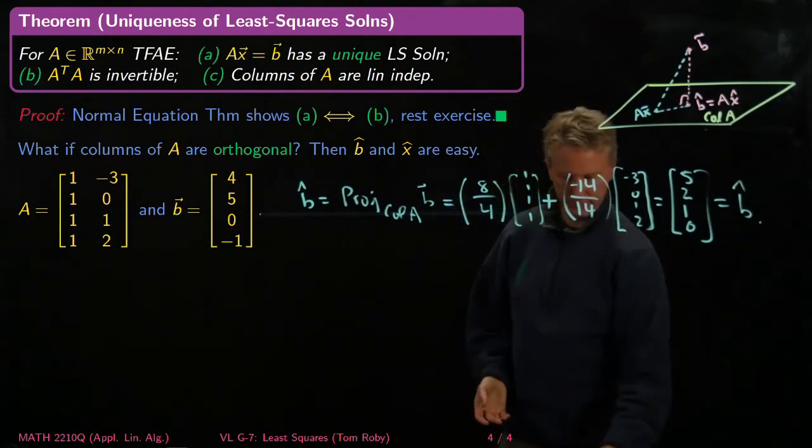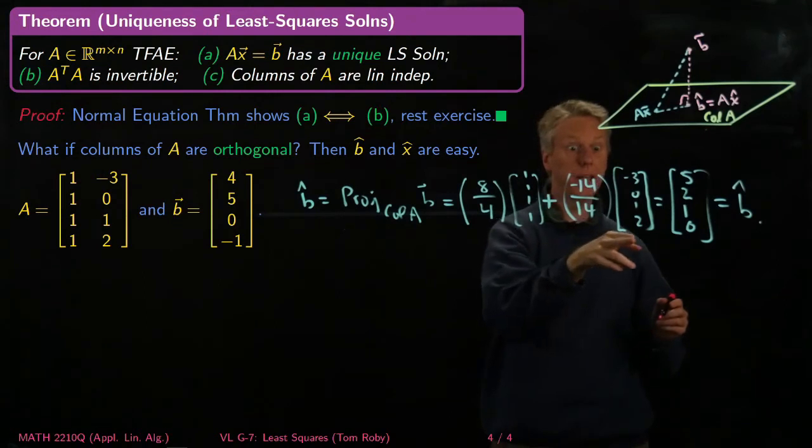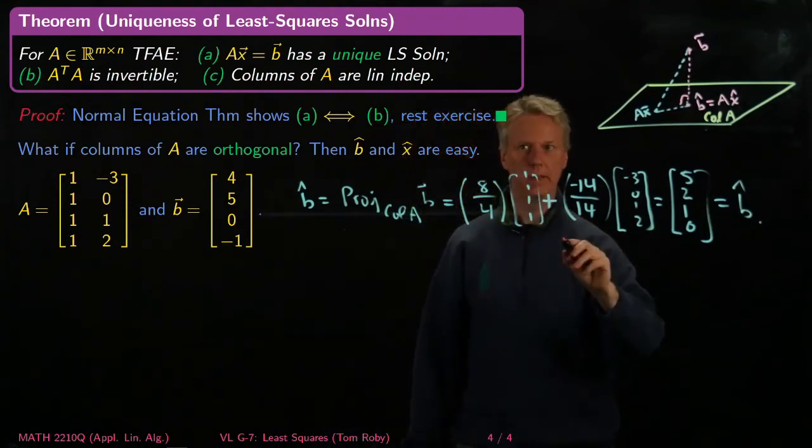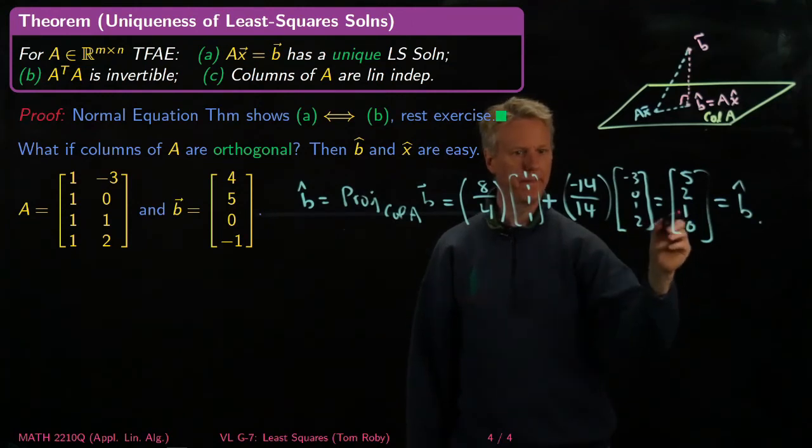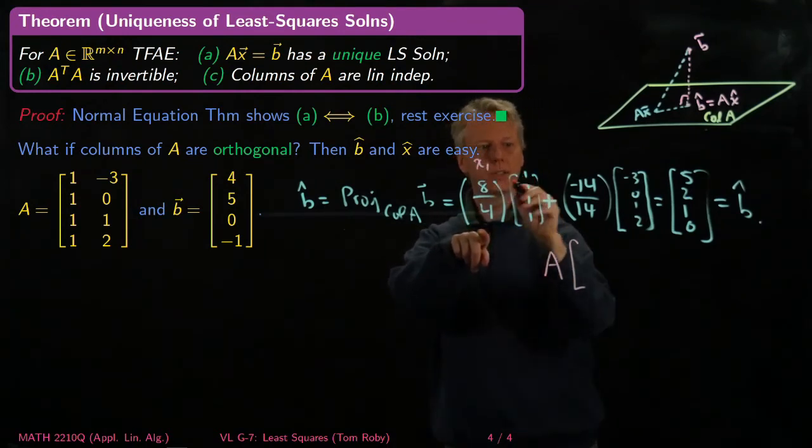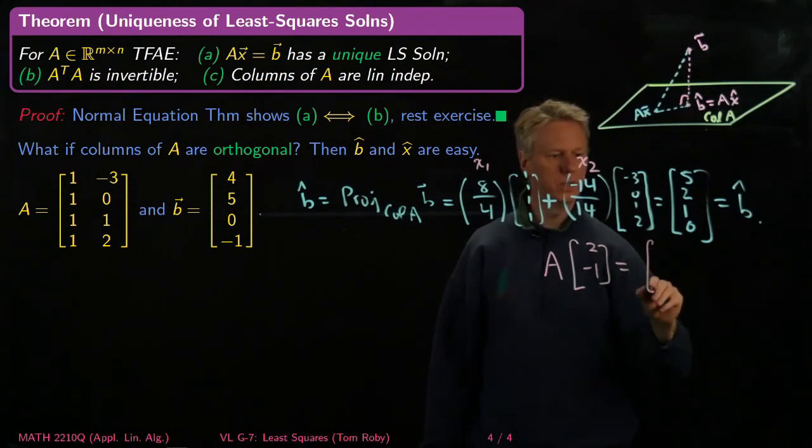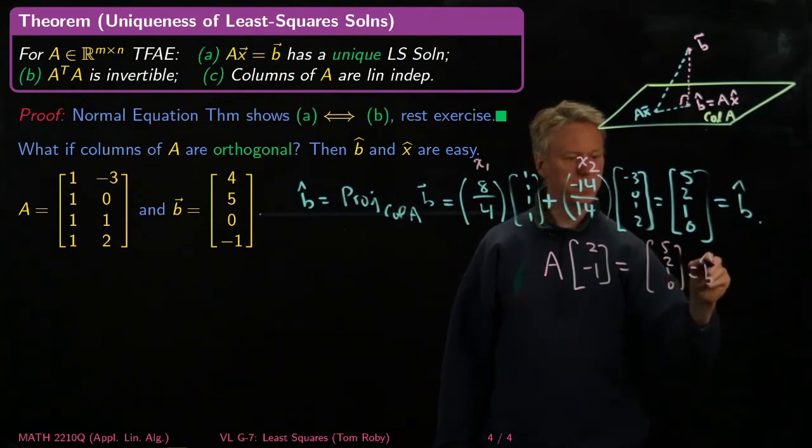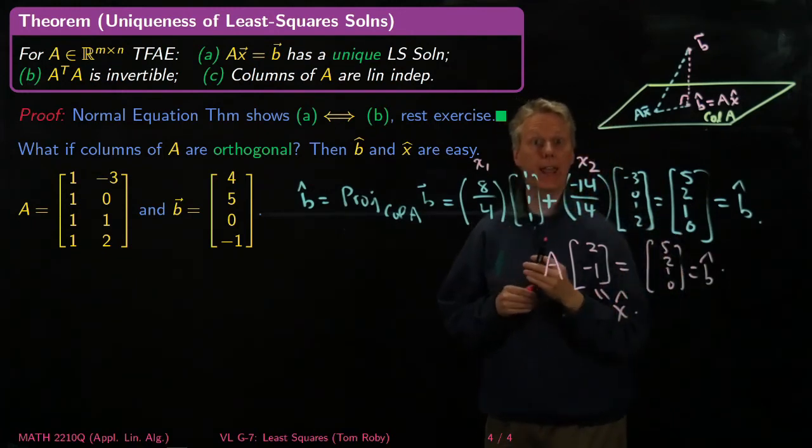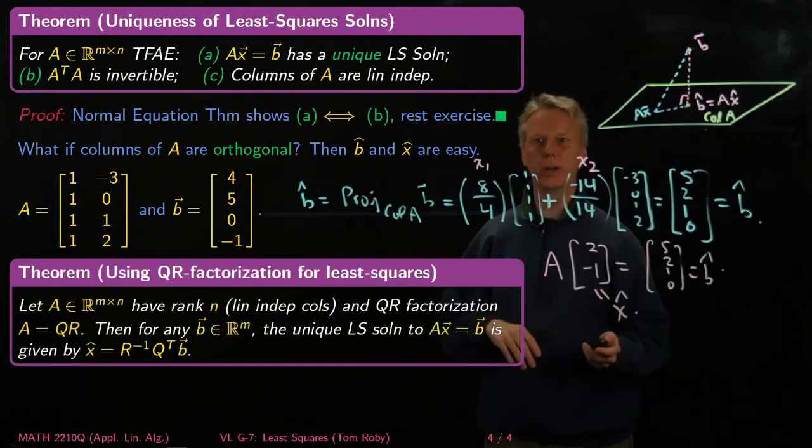But it's better than that. What is x hat? So here's the beautiful thing. Multiplying A times x hat is just taking a linear combination of the columns of A, and that's exactly what I've done here. So what this equation exactly says is that A times, well, this is x1 and this is x2, right? So A times [2, -1] is equal to [5, 2, 1, 0] equals B hat. So therefore, [2, -1] is x hat. So we've computed B hat and x hat trivially once we've got an orthogonal basis. So that's mostly what I wanted to show you here for that case.